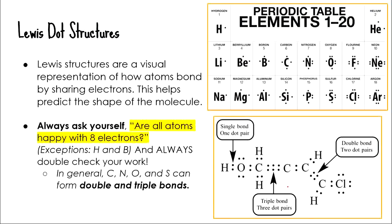We draw Lewis dot structures to help us visualize how atoms bond by sharing electrons. Drawing Lewis dot structures also helps predict the shape of the molecule. Remember, when drawing Lewis dot structures it's all about valence electrons — you have a picture of the periodic table on your screen for reference.